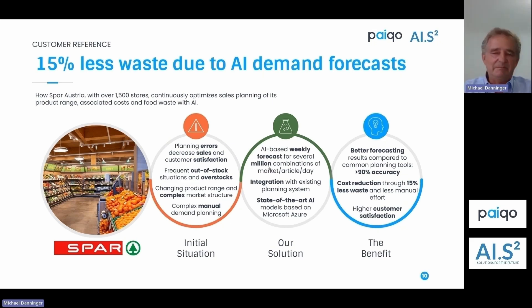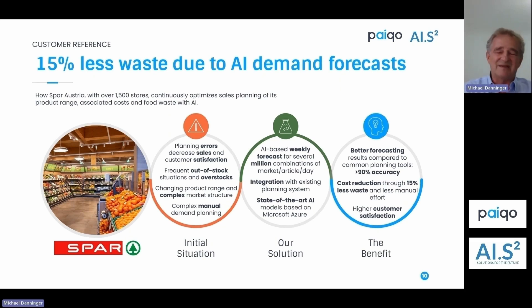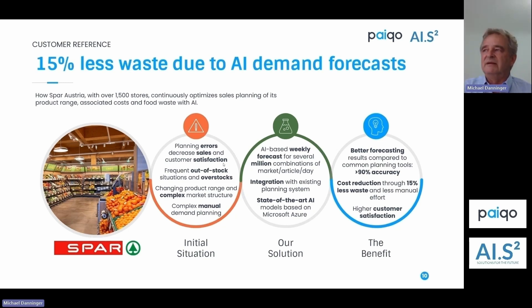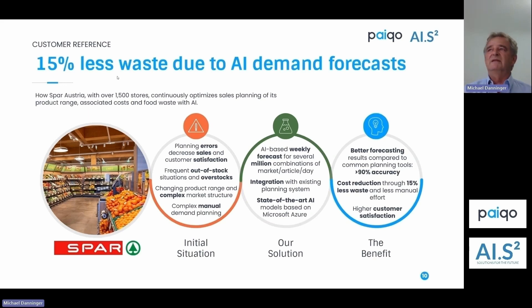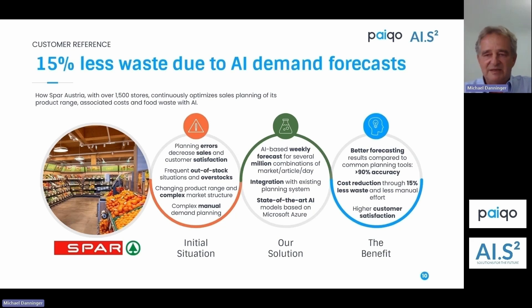The overall main goal was to get customer satisfaction back up. With our solution, we do a weekly forecast for several million combinations — every single article, every single market, every single day — across almost 1,600 markets. The result is a proposal for disposition: which amount of which article should be delivered to which market on which day. Not only did they achieve their main objective of increasing customer satisfaction, but they also saved 15% of waste using our solution — we're talking double-digit million euros — so the return on investment is measured in days or maximum weeks.